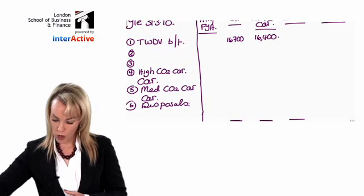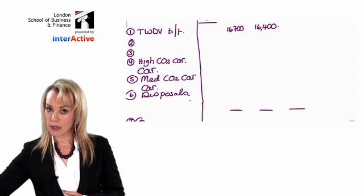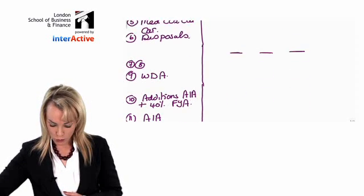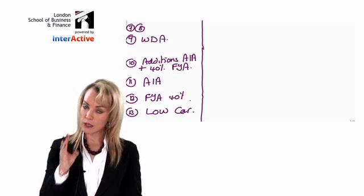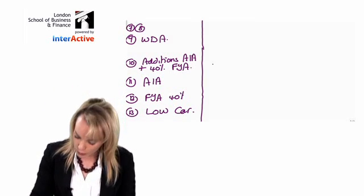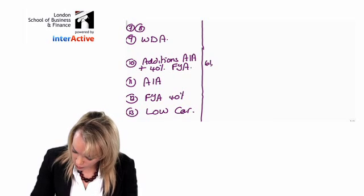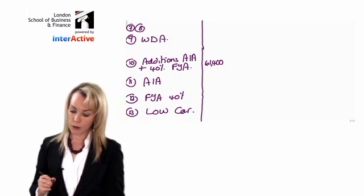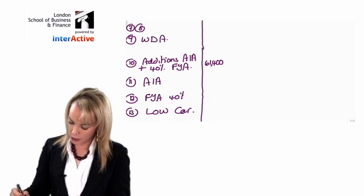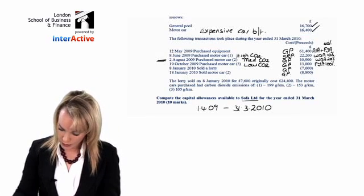The first figure is 61,400. We wrote AIA and FYA next to that one, so that goes down to line 10 into the column that says AIA and FYA above it. I'm going to put 61,400 into that column. That's the first item.